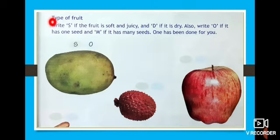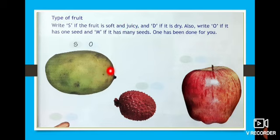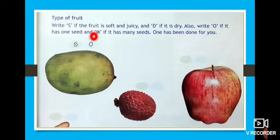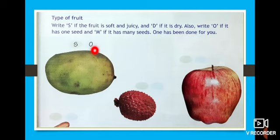Now look at your type of fruit exercise. Write S if the fruit is soft and juicy, D if it is dry, O if it has one seed, and M if it has many seeds. One has been done for you. For mango, it is a soft and juicy fruit, so they write S. And it has only one seed, so they write O.